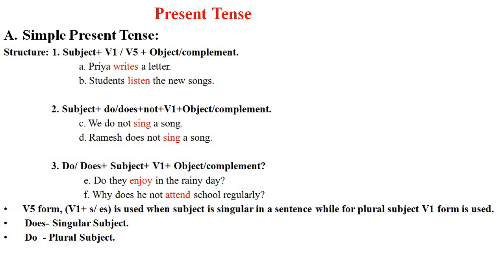For a negative sentence, the structure is: subject plus do or does not plus first form of the verb plus object or complement. Example: 'We do not sing a song.' For an interrogative sentence, the structure is: do or does plus subject plus first form of the verb plus object or complement. Examples: 'Do they enjoy in the rainy day?' and 'Why does he not attend school regularly?'